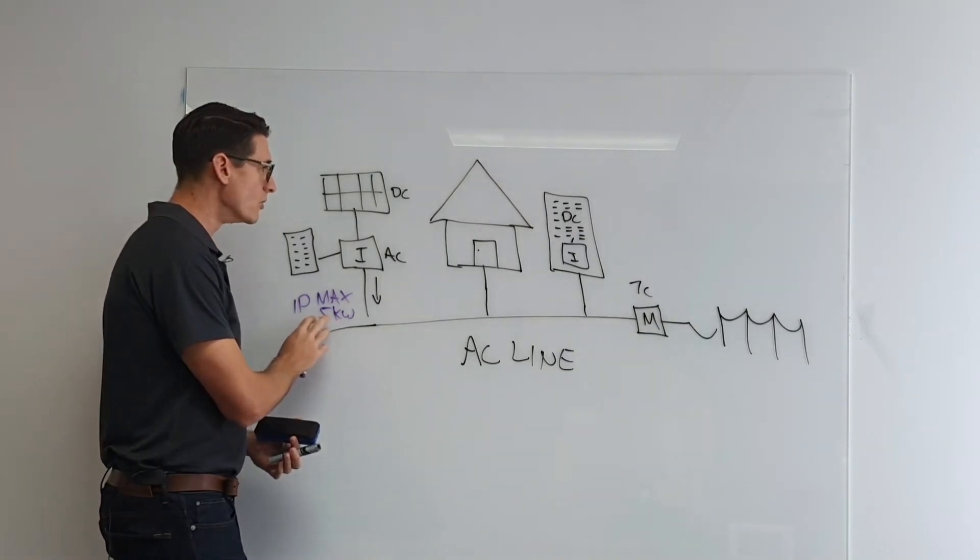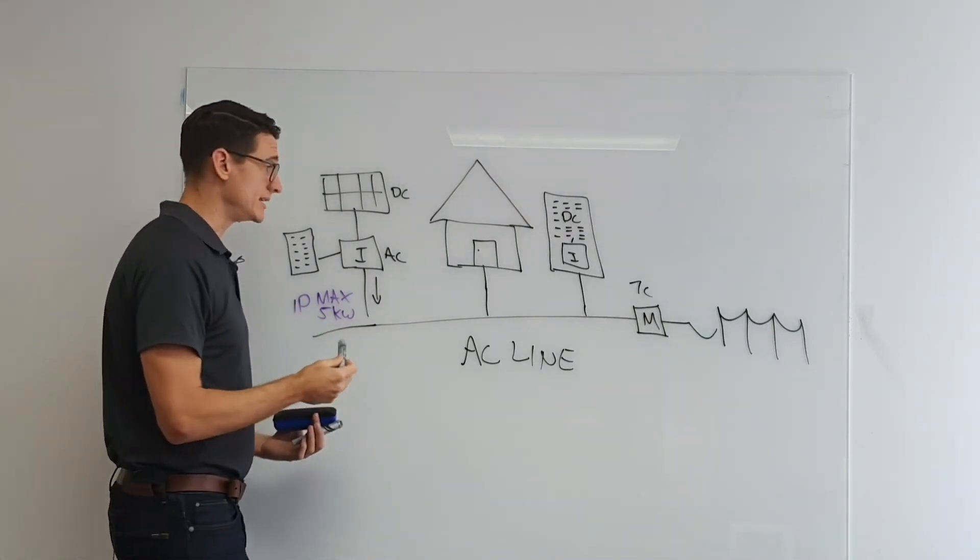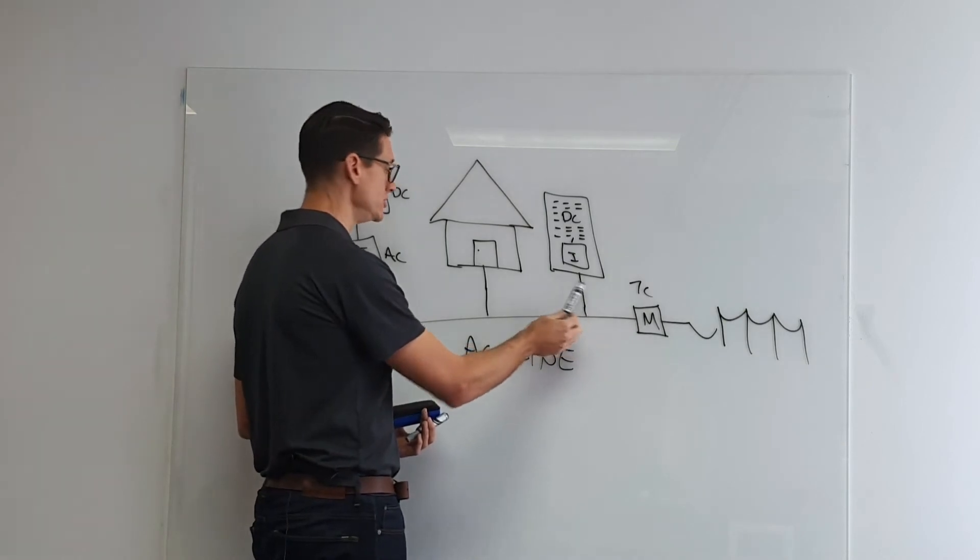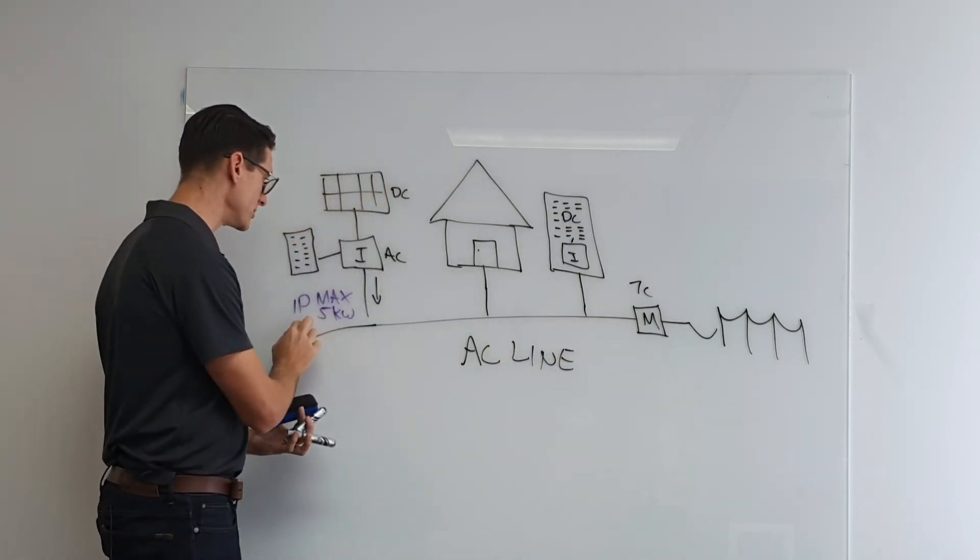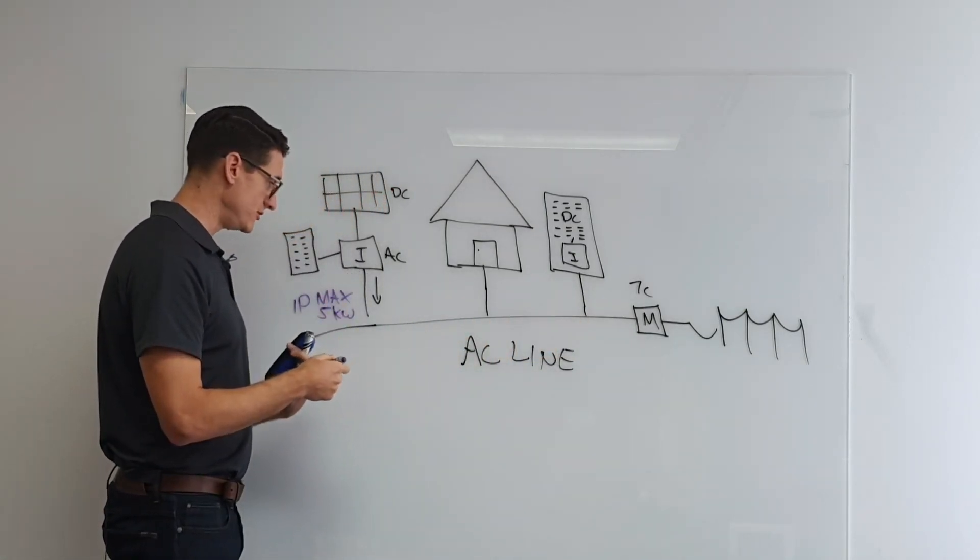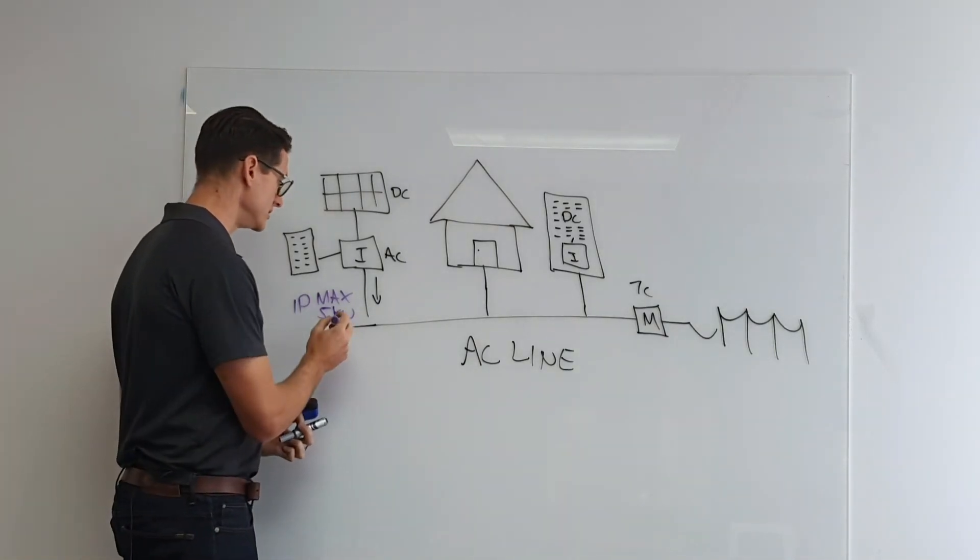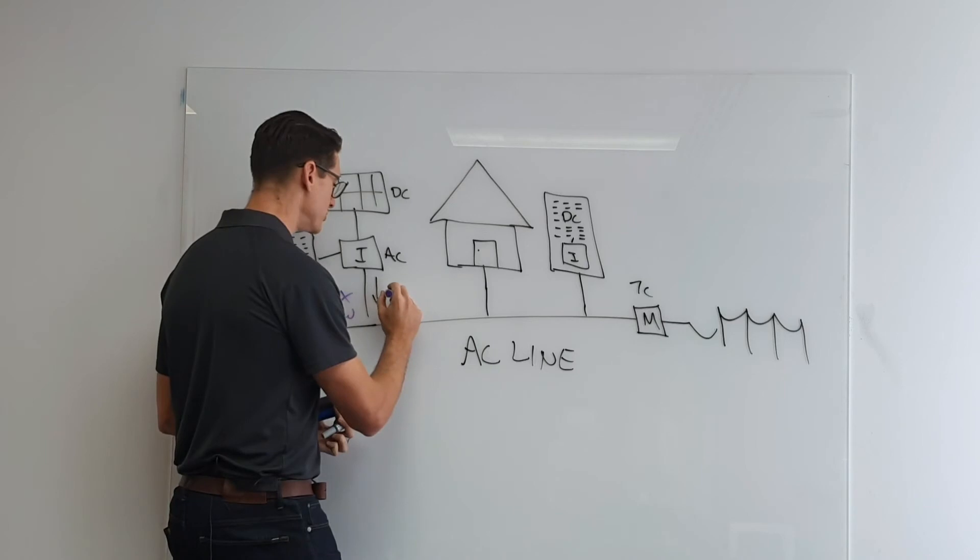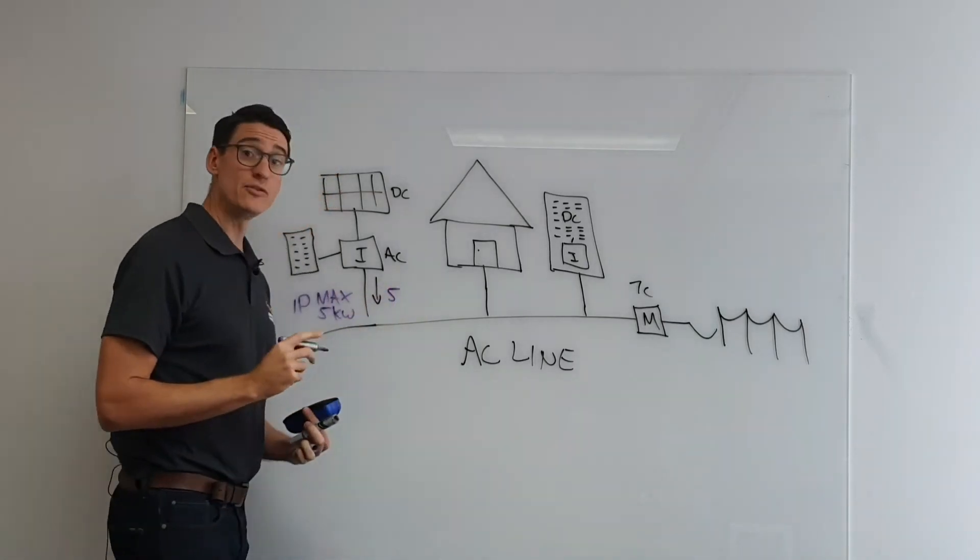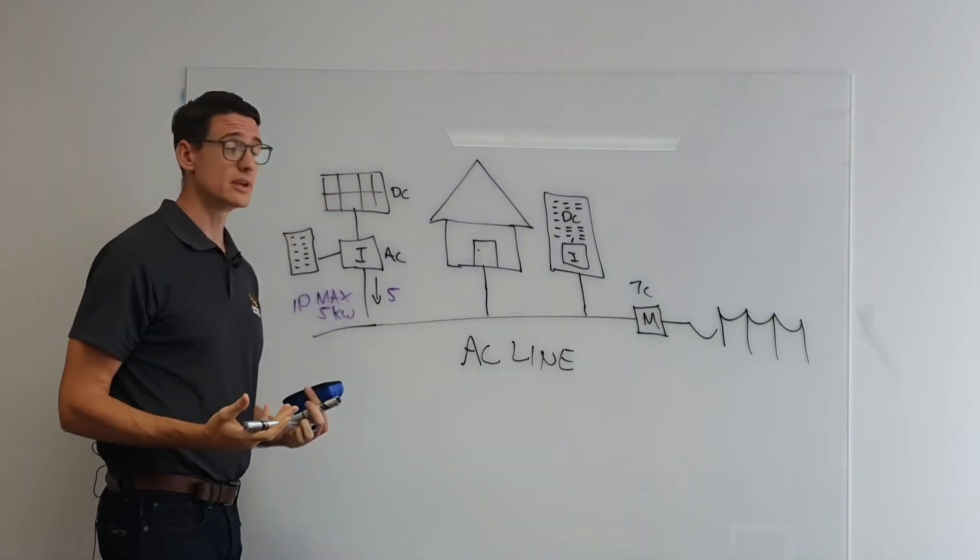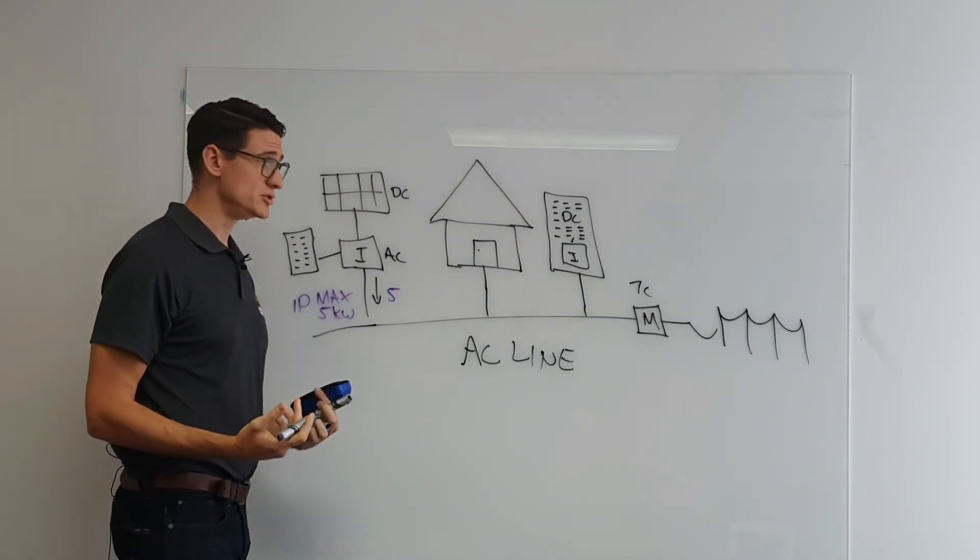So one of the things is then with an AC coupled battery solution, you might have a situation of maximum is five. If you're producing a maximum power, then the maximum you can ever push down this line is five. If you have a single phase home, you have quite high loads during the daytime when the solar is producing.